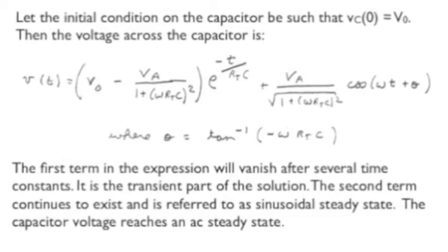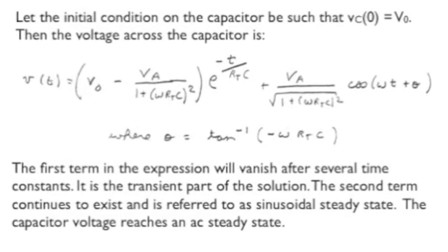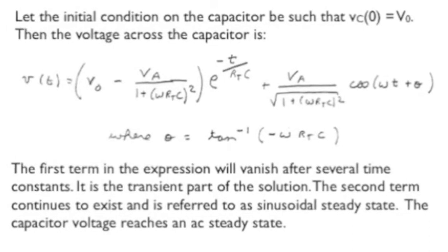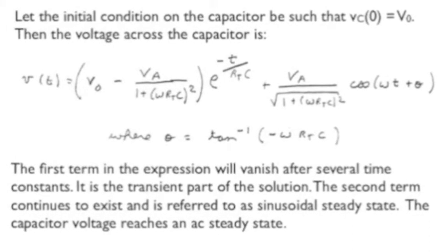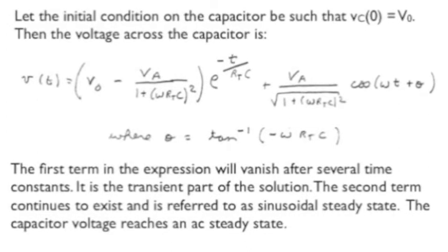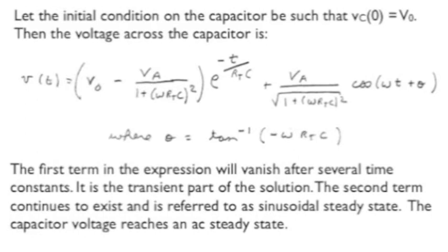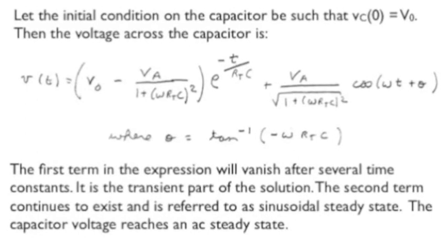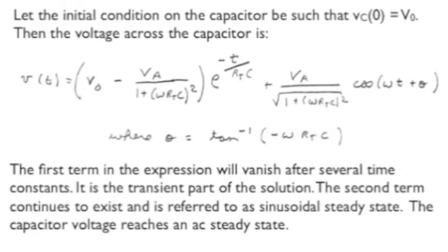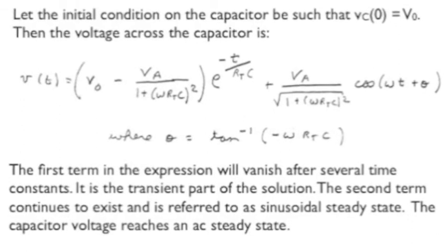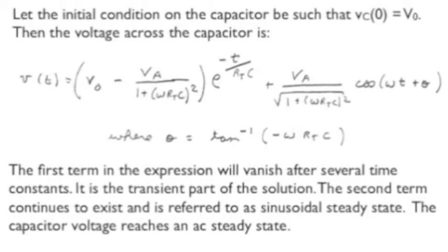But wait, there was also one other thing that I haven't included in here. Y sub X was only part of the state variable response. There was also a term depending on the initial condition. And adding that term to what we already have, we arrive at this final expression for the capacitor voltage. There's a transient term that will fade away exponentially after the switch is closed at T equals zero.